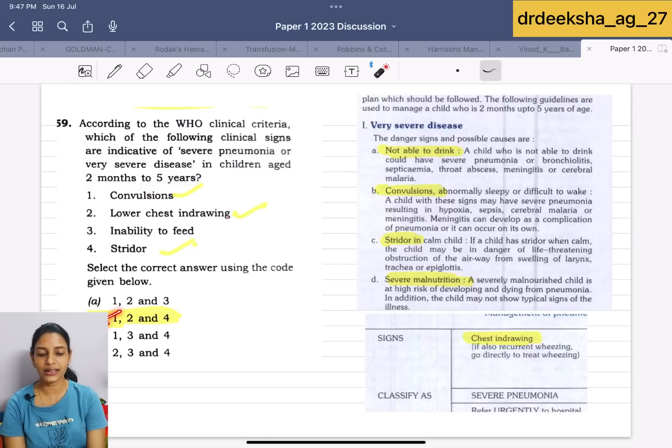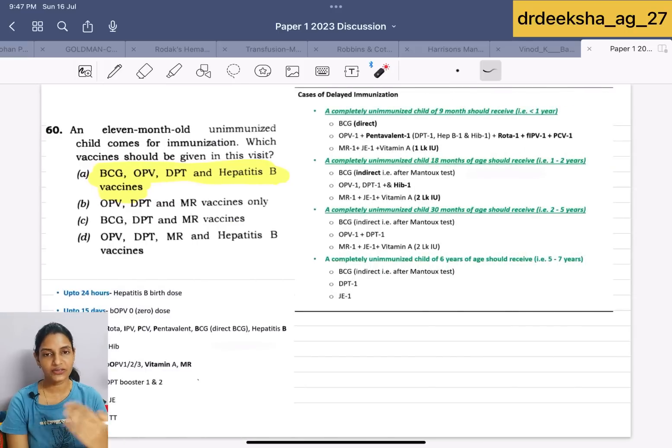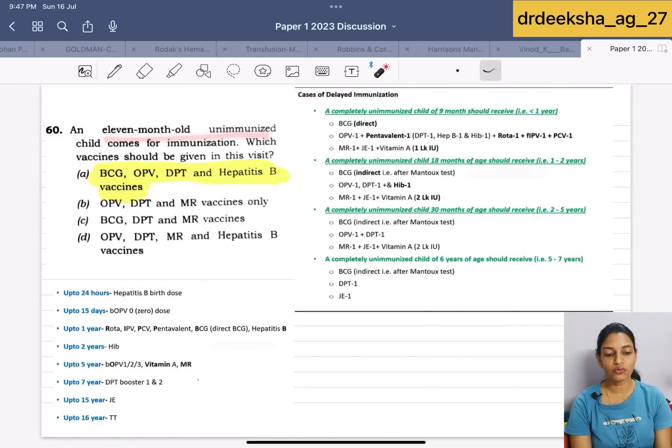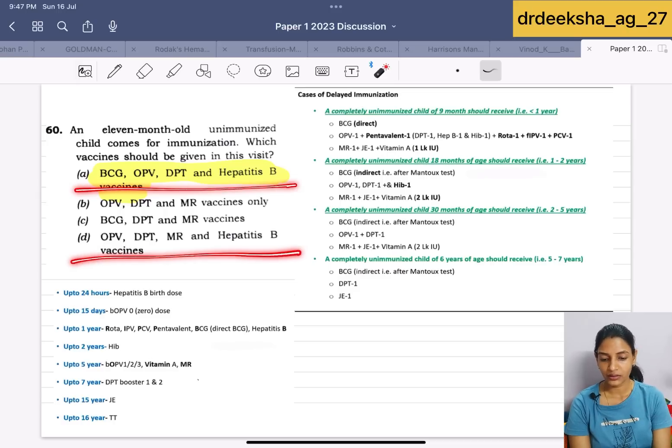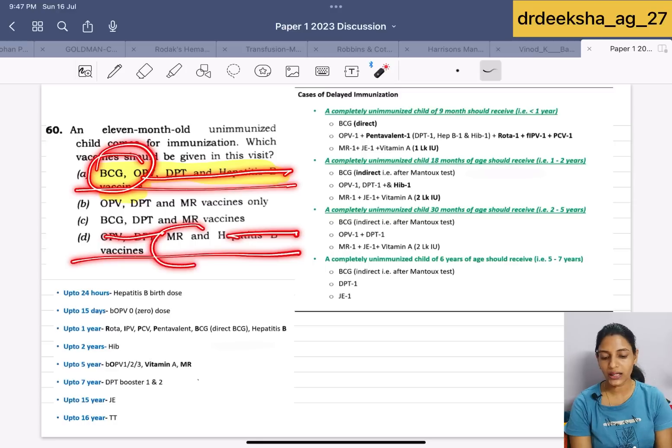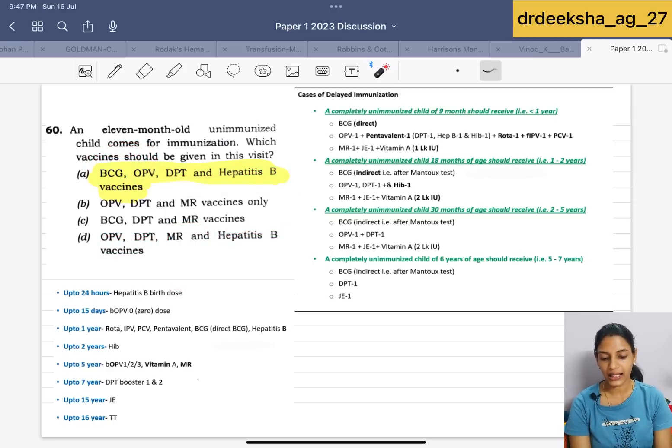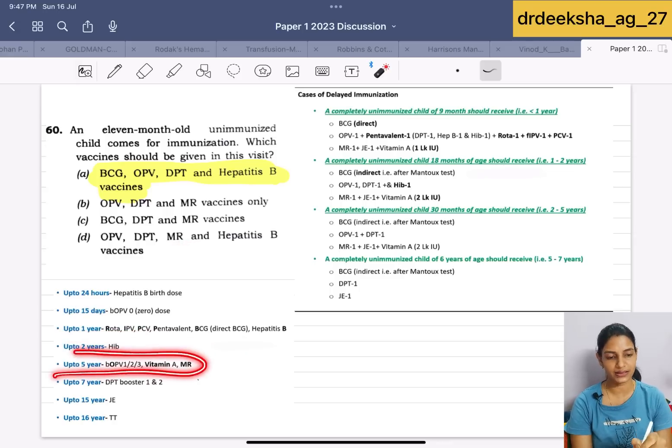Next question they are saying is for the 11 month unimmunized child, which vaccine we should give in the first visit? For the unimmunized child less than 1 year, we should give BCG, OPV, Penta, Rota, IPV, PCV, MR, Japanese and vitamin A. According to you, there would be a confusion between A option and D option. OPV, DPT, Hepatitis B are both there. The difference, BCG and MR, we have to choose among 2. Look, BCG can be given only up to the 1 year, while MR can be given up to the age of 5 year. What would you choose in this case? We should go for BCG in this case because it cannot be given later while MR can be given.